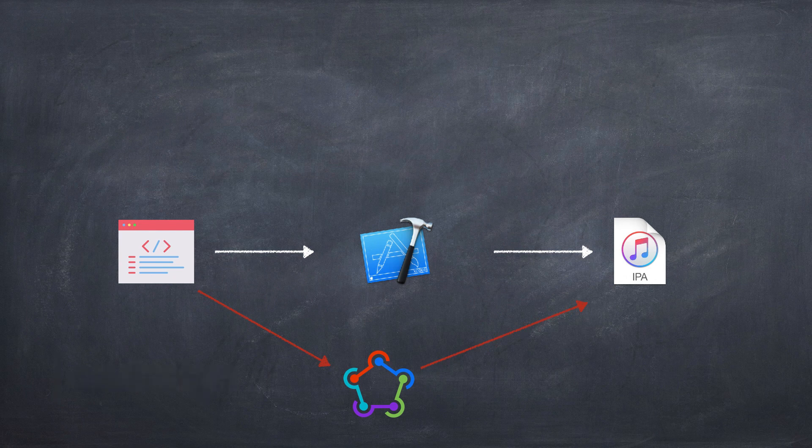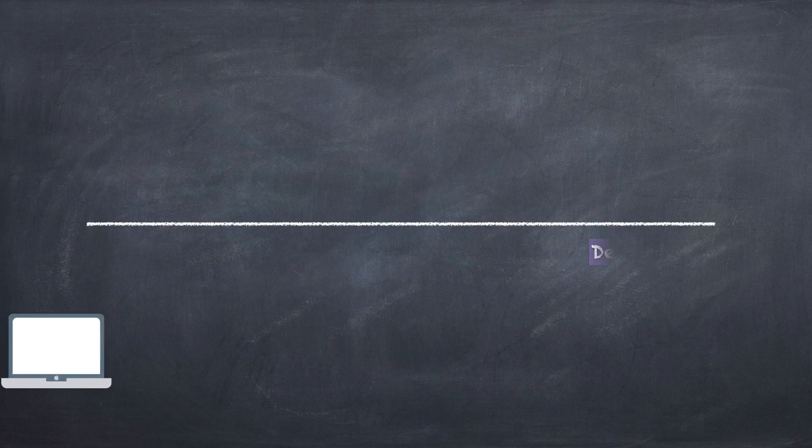In Xcode, the codesign command line tool is used to sign the app when it's built. To have a deeper understanding of how code signing works, please watch our other videos. In the last part here, I'll give a summary of the process to create the necessary steps in Xcode in support of code signing.